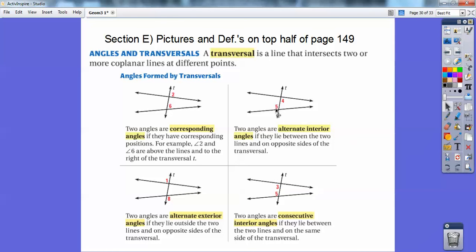Alternate interior angles, they alternate on the side of the transversal. One's on one side, one's on the other side. And they're inside the two other lines right there. That's why they're called alternate interior. These guys are called alternate exterior. They alternate on the transversal. One's on one side, one's on the other side. And they're outside the two lines. They're alternate exteriors.